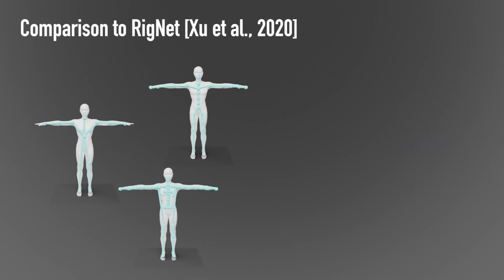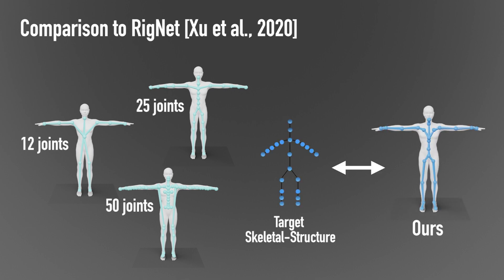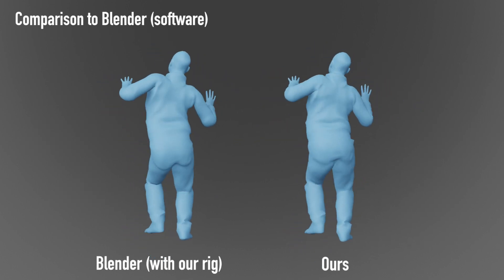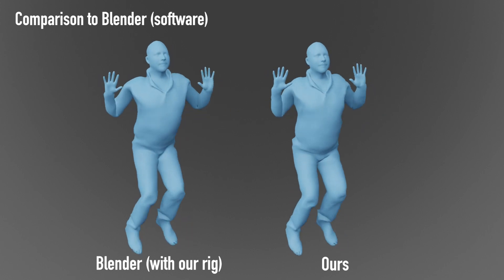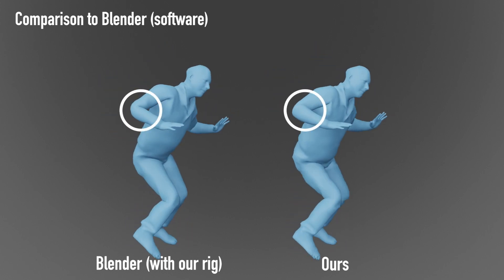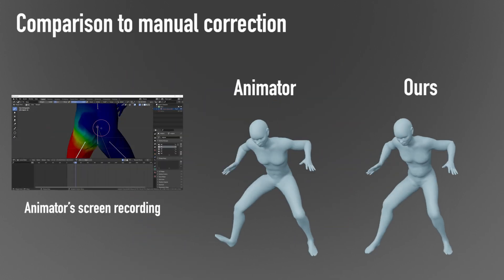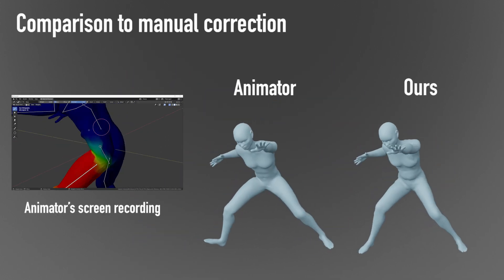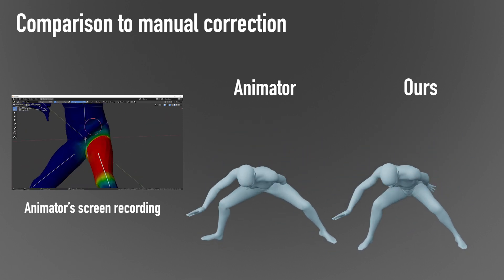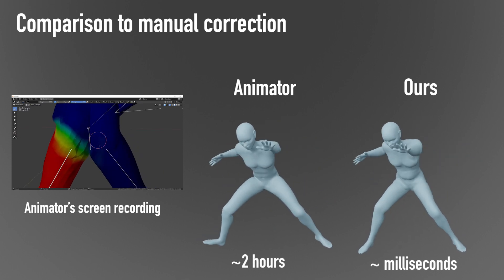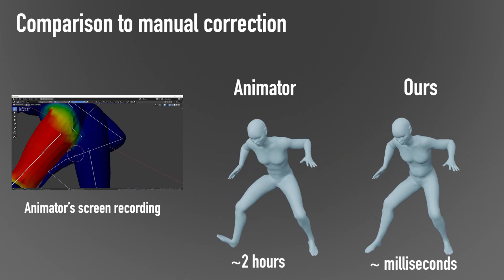We compare our method to RigNet, which outputs an arbitrary skeletal structure, so it is not directly possible to animate the output skeleton with mocap data. Here we compare our results to Blender's automatic skinning functionality. Our fully automatic approach outperforms Blender's deformation quality. We asked an animator to manually correct the automatic deformation produced by Blender — it took them a decent amount of time to reach a comparable deformation quality, which our network achieves with a feed-forward pass.